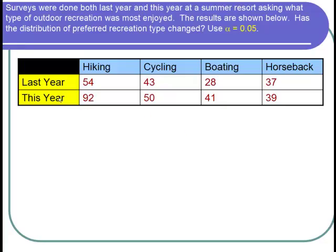So here's the results. We can see we have last year and this year and the recreation types are hiking, cycling, boating, and horseback. And these are the counts for each year.